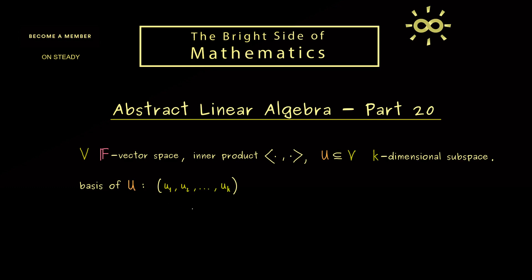And now the idea for today is that we take this general algebraic basis given by the vectors u1, u2 to uk, and transform it to a basis that respects our geometry given by the inner product. More precisely, what we want to get is a so-called ONB, an orthonormal basis of U. And there we will denote the elements with b1, b2, and so on.